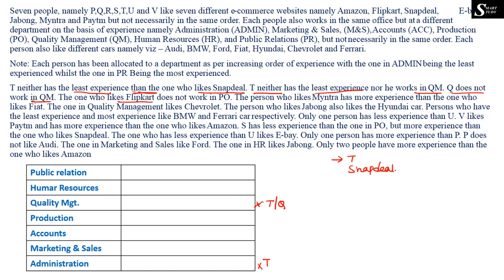The one who likes Flipkart does not work in PO (Production department), so Flipkart cannot be placed in Production. Also, the person who likes Myntra has more experience than the person who likes Fiat car, meaning Myntra must be placed above Fiat in the experience order.